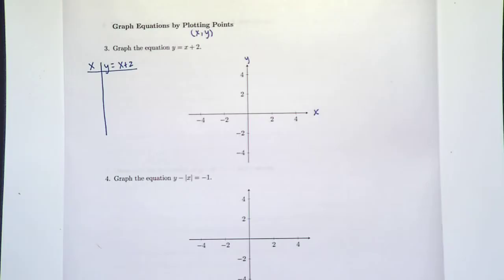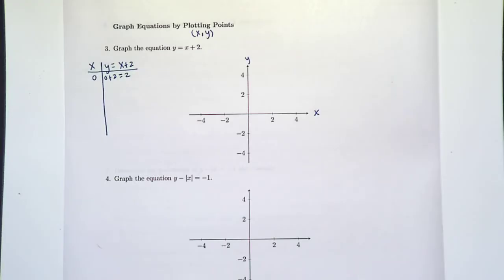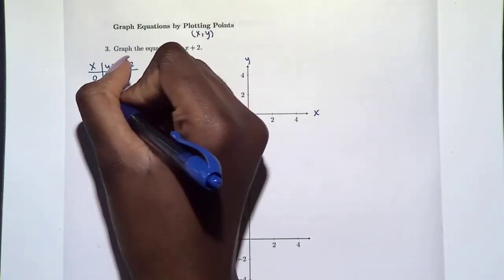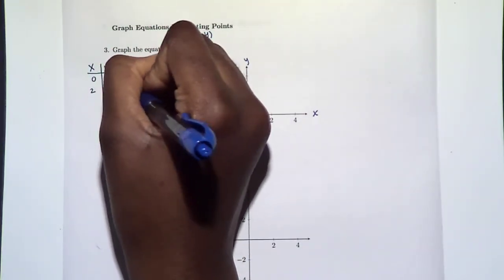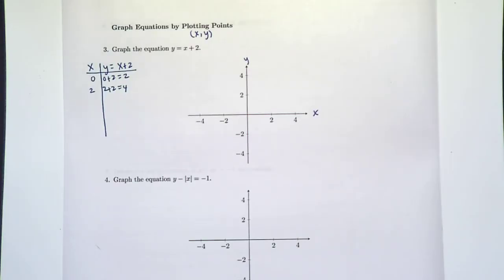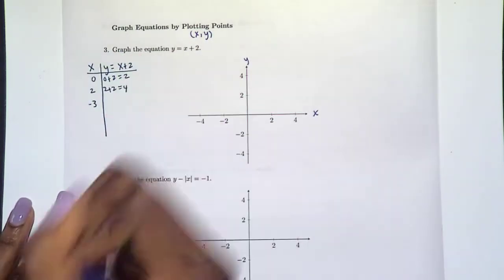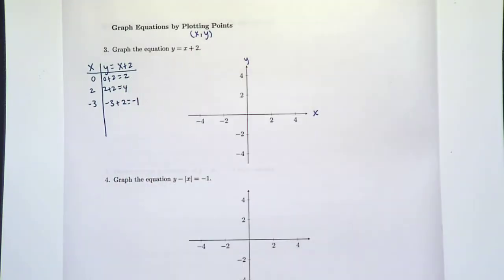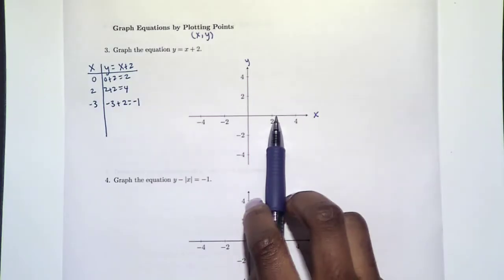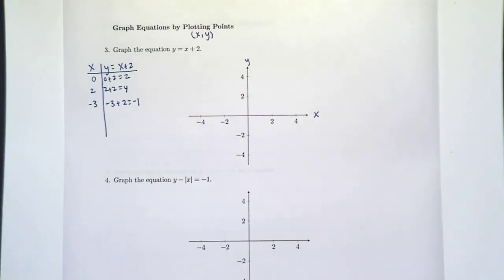We can choose whatever x values we want, plug them into y, and we'll have our coordinates. I like to start with something easy like 0 or 1. If x is 0, then y is 0 plus 2. If x is 2, then y is 2 plus 2, so it's 4. Let's also try something negative — if x is negative 3, y is negative 3 plus 2 which is negative 1. You don't need to do a lot of points, just enough to find a pattern — what's happening at 0, on the positive side, and on the negative side.